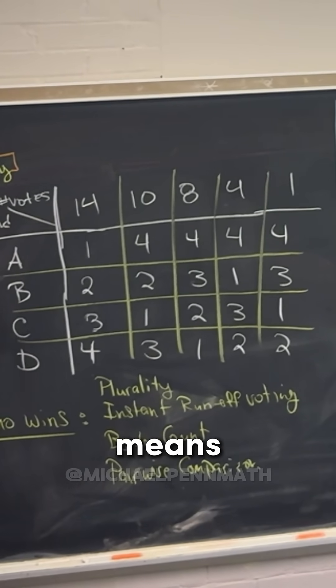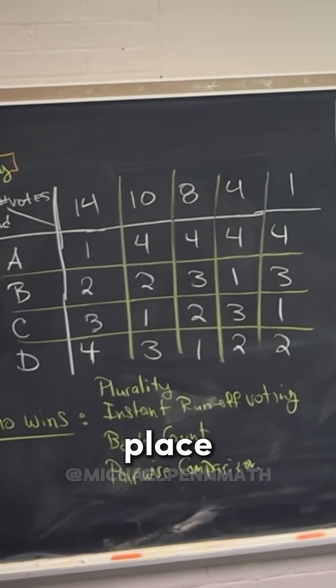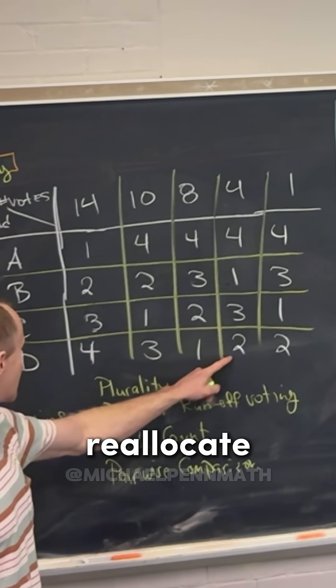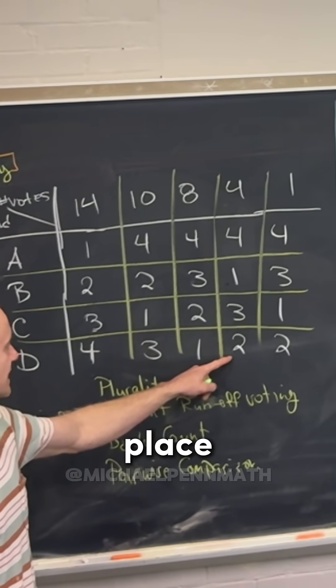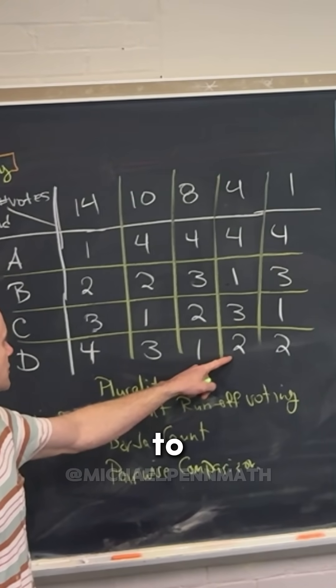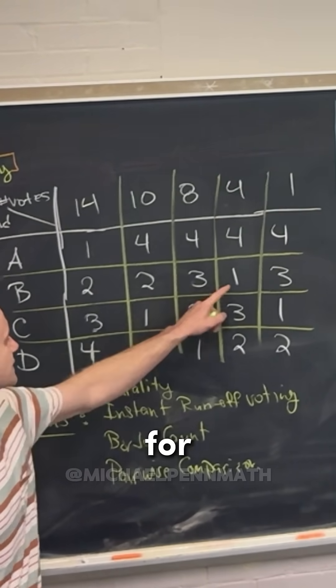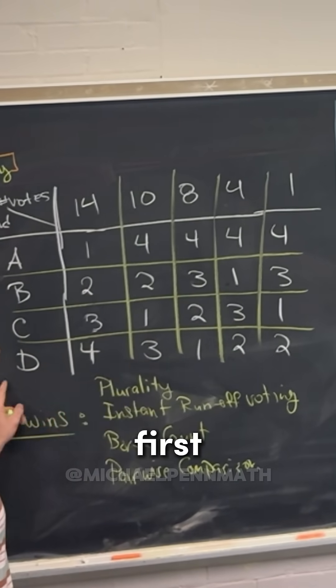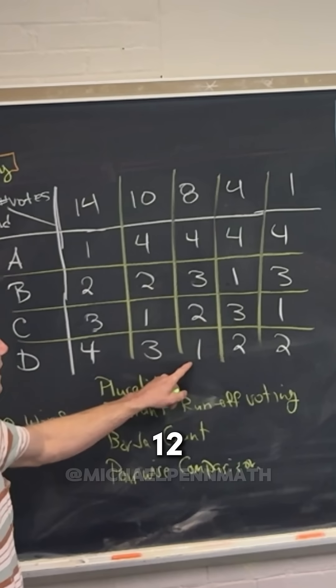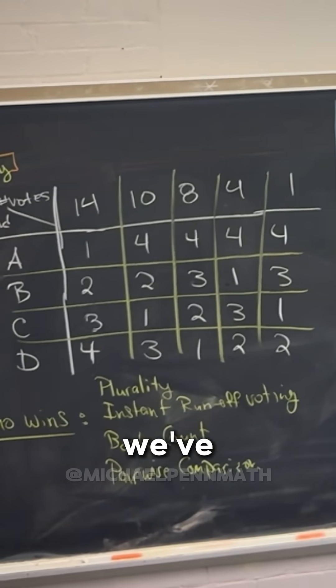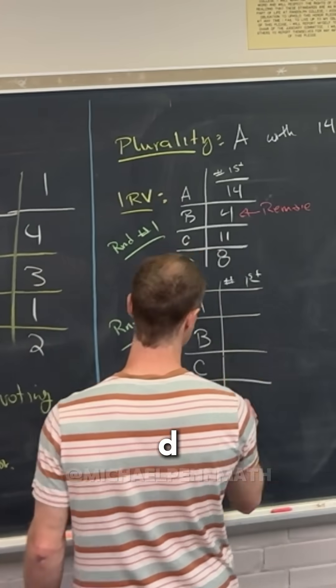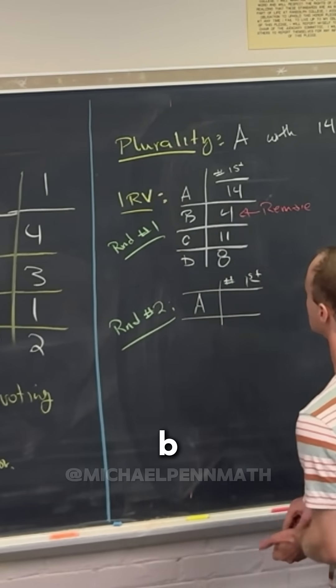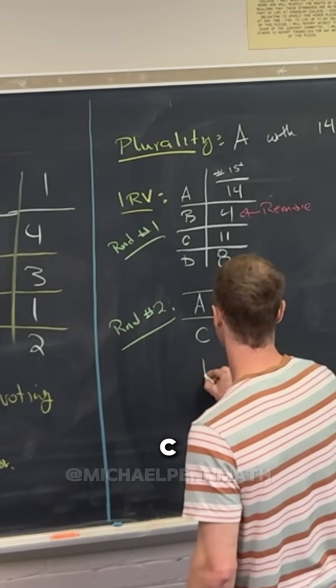So that means we need to go to the place where B was first, right? And reallocate these second place votes to B to, sorry, these votes for D that were second place to first place, right? So that makes D first place in 12 ballots, right? Yeah. So D is first in 12. Oh, and I guess I should have removed B. So we've got C and D.